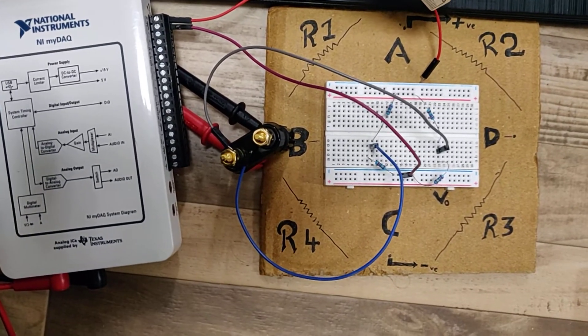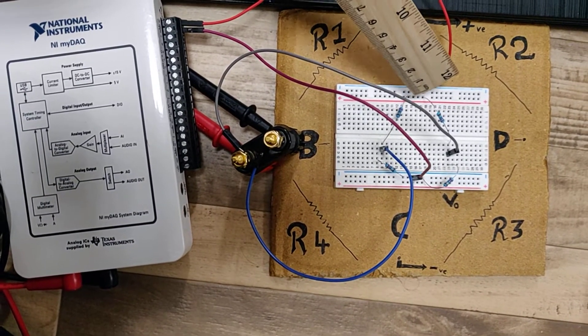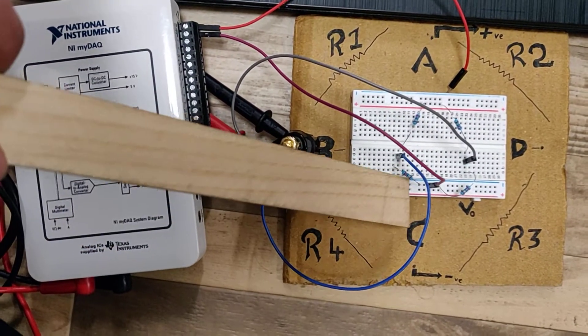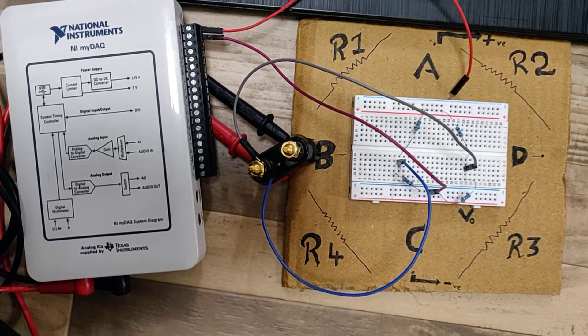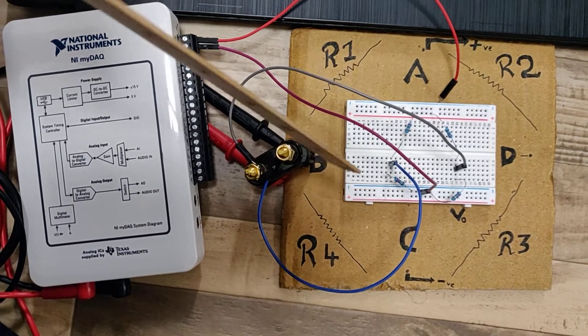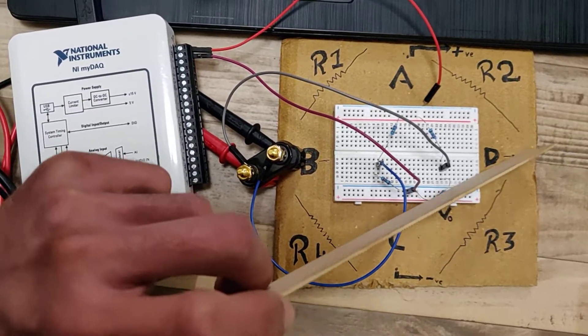Initially we are starting it with 22 ohm resistor which is R1, R2, R3 and R4. In this circuit this point is called A, this is B, this is C and this is D.